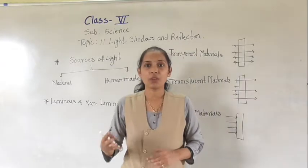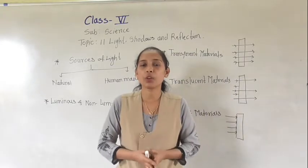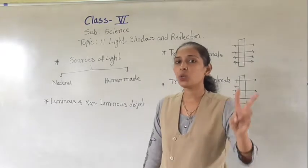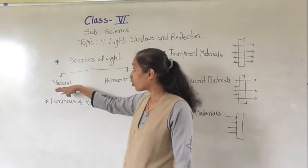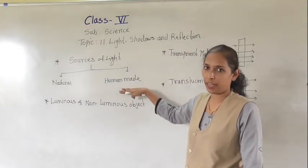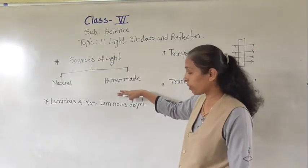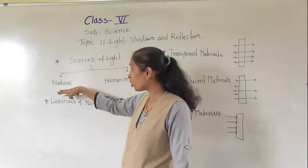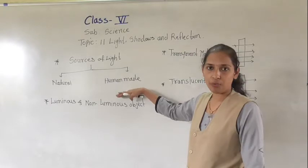On the basis of their nature, these sources of light are classified into two types: natural sources of light and human-made sources of light.